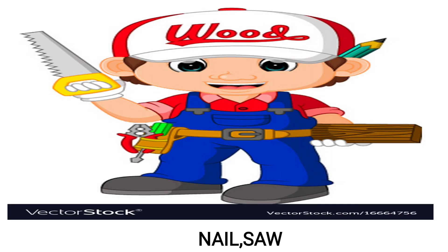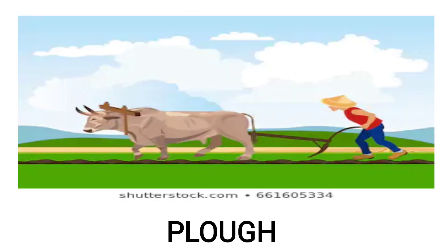Here you can see one carpenter. He is using a nail and a saw. Here you can see one farmer working in the field. He is using a plow.